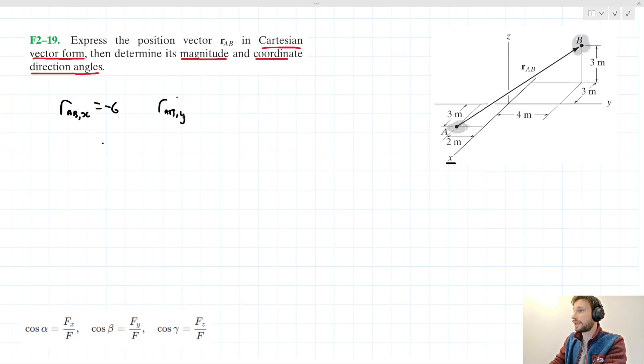r_AB,y - let's have a look. Evidently it's traveling 2 meters and then 4 meters, so this is going to be 6.